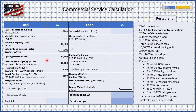Moving on to show window lighting: per 220.43A, we take show window lighting at 200 VA per linear foot. We have 70 feet of show window, so 200 times 70 gives us 14,000 VA. But we have to add an extra 25% because it is a continuous load, meaning it operates more than three hours at a time. That extra 25% takes us to 17,500 VA.